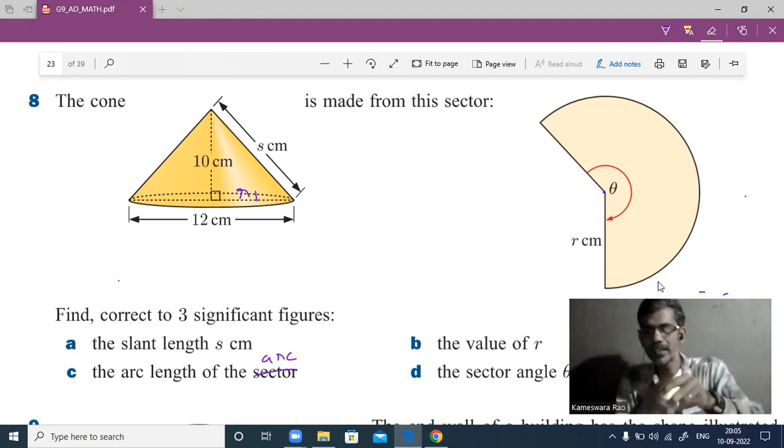If I cut and open this, it is made into a sector. A sector is a region formed by two radii and an arc of a circle. That cone is made from this sector.